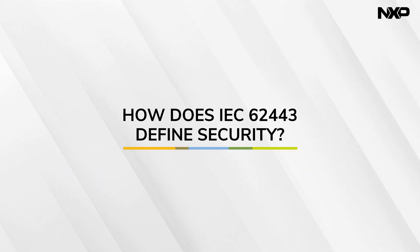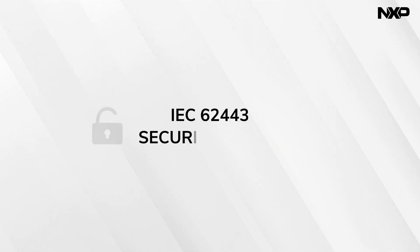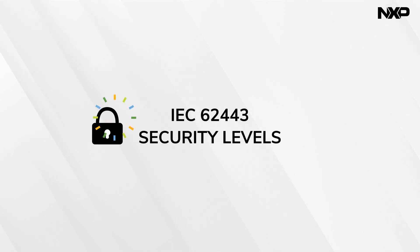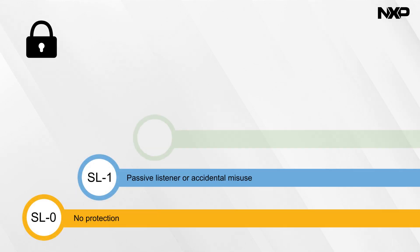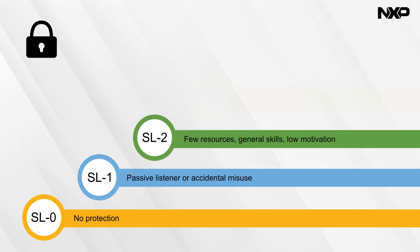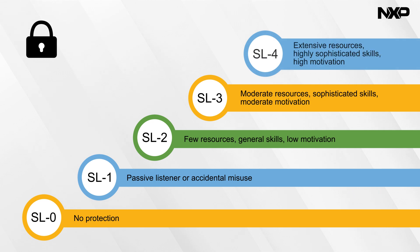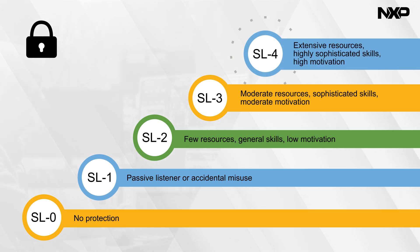Protecting every system against every threat imaginable isn't practical or necessary, so IEC 62443 defines different security levels for different cybersecurity use cases. Each step up in security level is intended to protect against more sophisticated threats with greater resources and greater motivation to compromise the system.